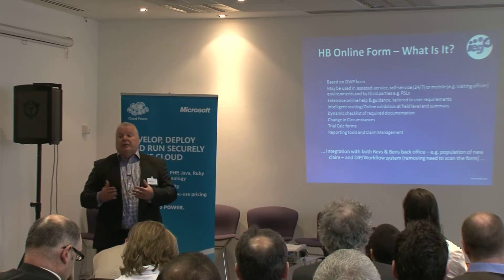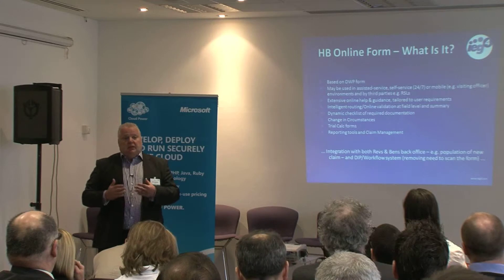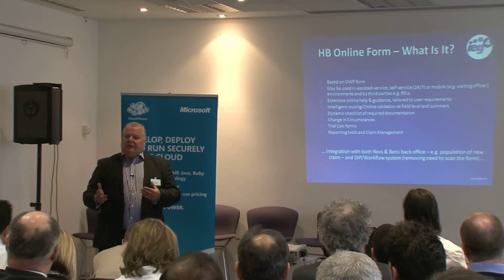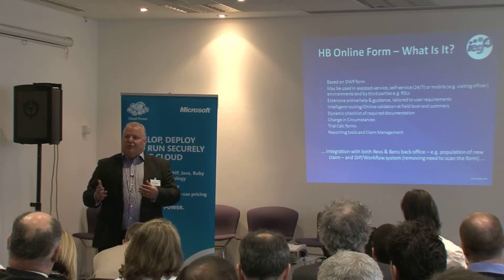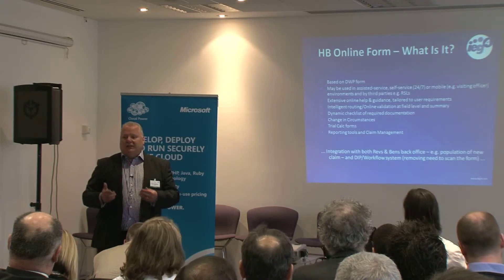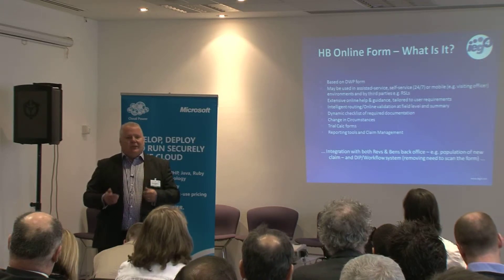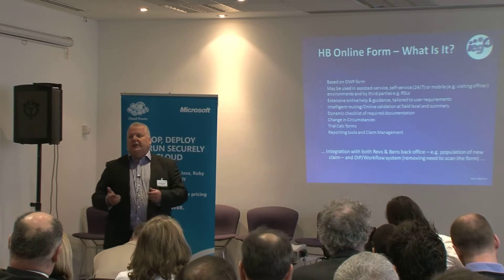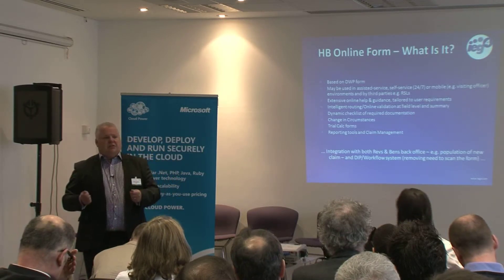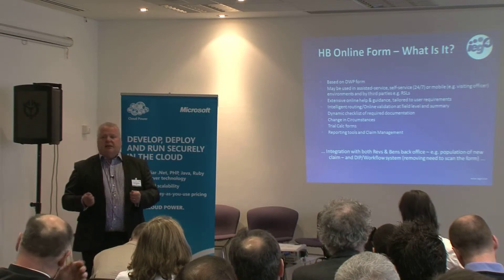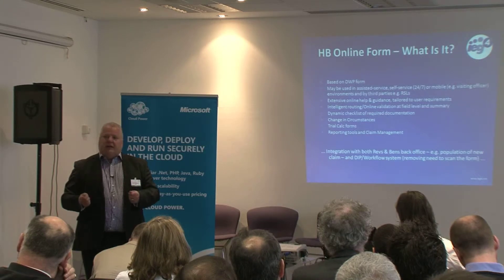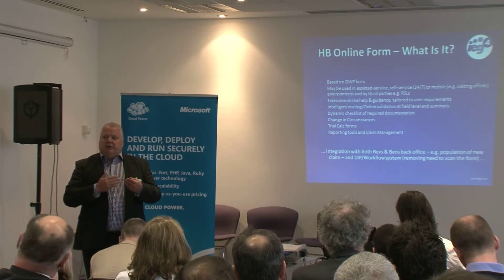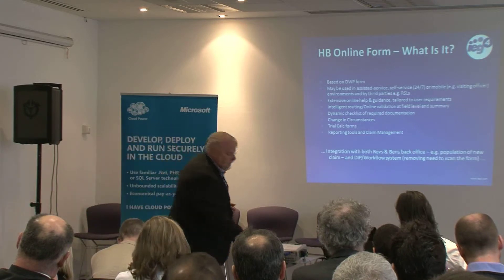One of our biggest selling points and the reason people move to online forms is the housing benefit form. Hopefully nobody in this room has ever applied for housing benefit, but that paper form is quite weighty — 40 to 50 pages normally. The cost of printing that type of paper form alone more than pays for this type of system going online.